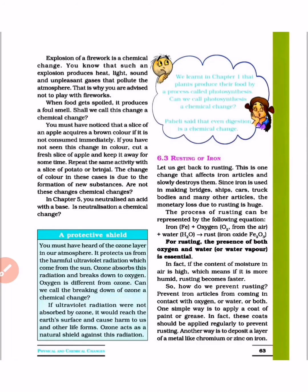Children, we will read about 6.3, that is rusting of iron. Before we have read our last video, let us get back to rusting. This is one change that affects iron articles and slowly destroys them. What is the reason for this?